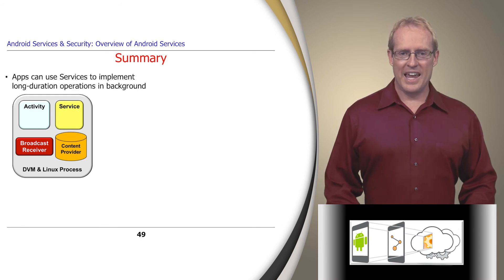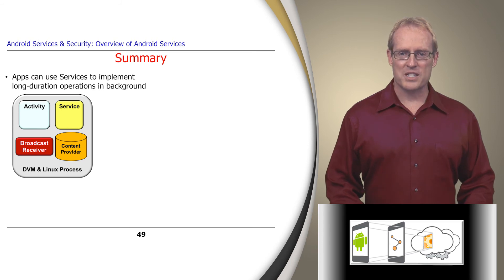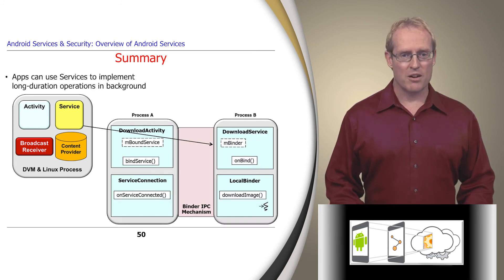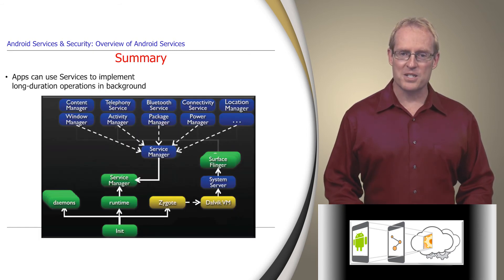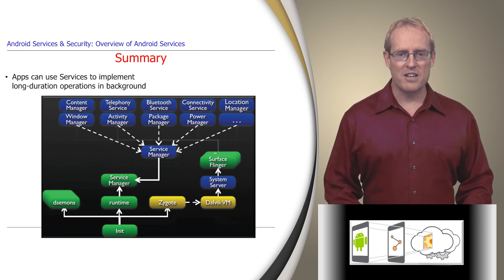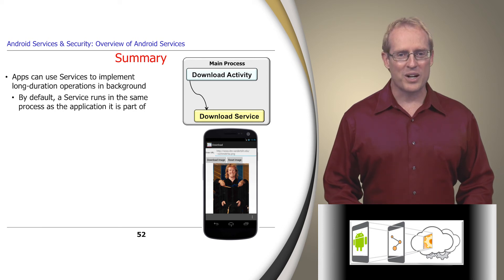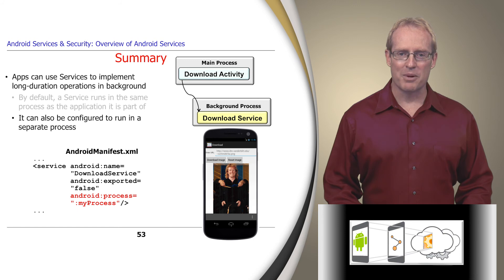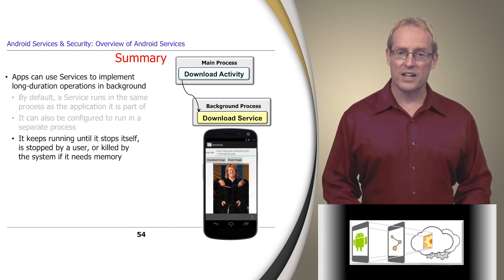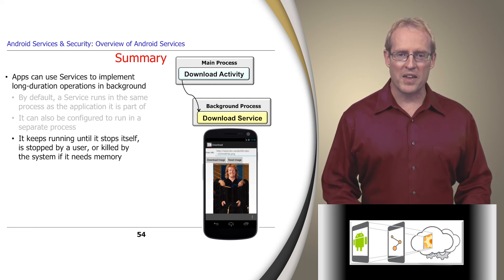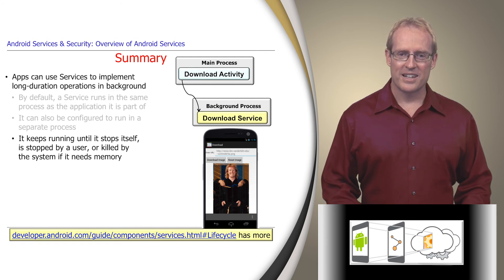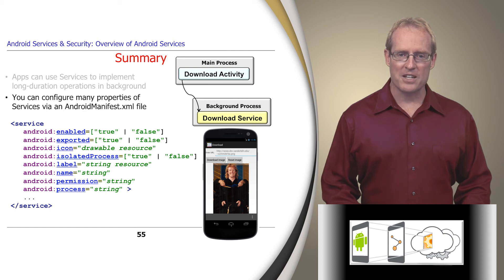In summary, Android applications use services to implement long-duration operations in the background. This module focuses primarily on services written by application developers, such as variants of started and bound services that download images from a remote server. Android also provides many predefined system services, such as the Activity Manager service, Location Manager service, and Telephony service. By default, a service runs in the same process as the application it's part of, though it can easily be configured to run in a separate process by adding an element to the Android manifest file. Regardless of configuration, a service continues to execute until it stops itself, is stopped by a user, or is terminated by the Android runtime when it runs low on memory. Many properties of services can be configured in an Android manifest XML file.